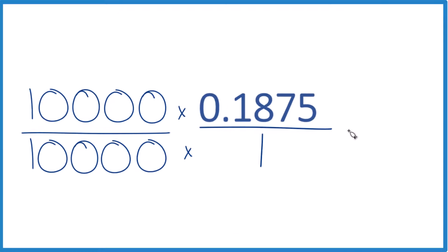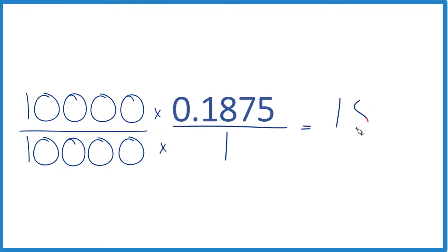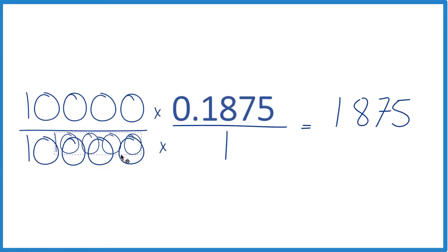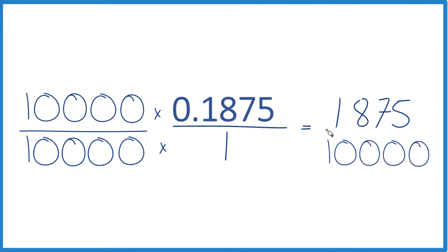But now when we multiply, we end up with 1,875. And that's that whole number we were looking for. On the bottom, we're multiplying 10,000 times one. So we're just going to get 10,000 here. So that is our fraction.